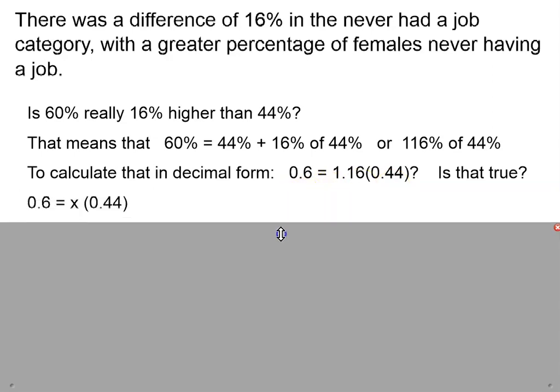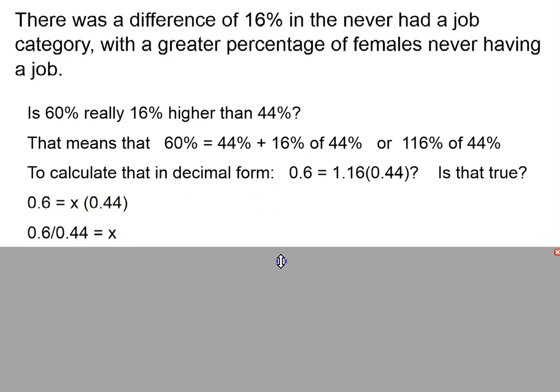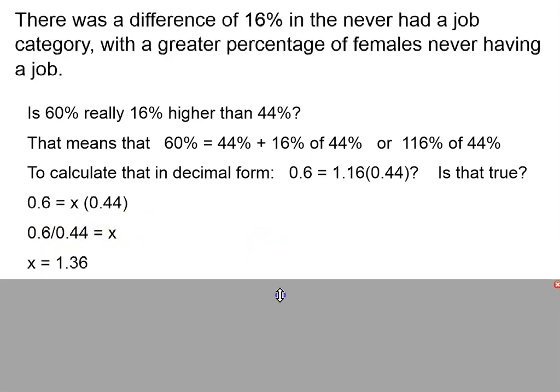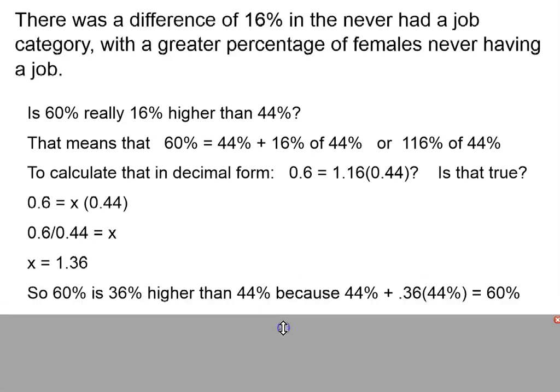So let's find out what is true. If we say 0.6 is what percentage of 0.44, then x equals 0.6 divided by 0.44, which equals 1.36. So really, 60% is 136% of 44%. In other words, if we take 44% and another 36% of 44%, almost another one-third of 44%, then we would get 60%.